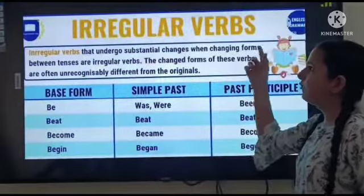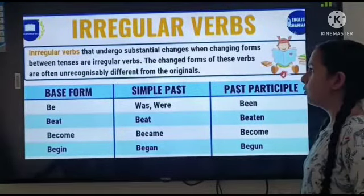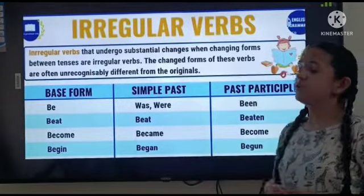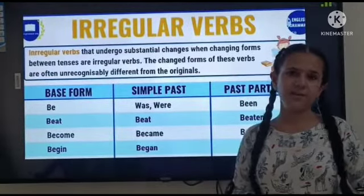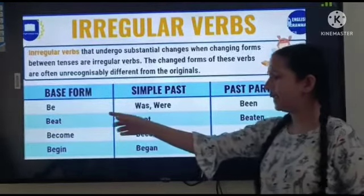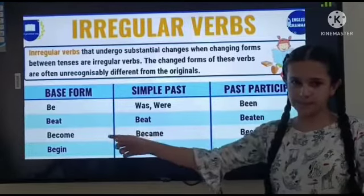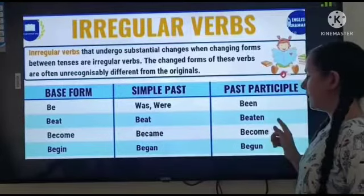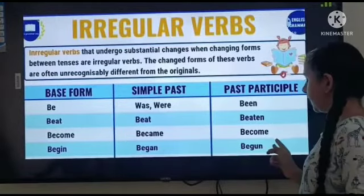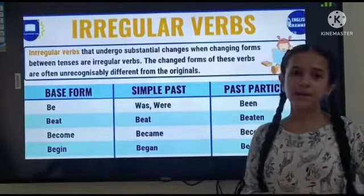Now, irregular verbs. Verbs that undergo substantial changes while changing forms between tenses are irregular verbs. For example: be, was, been. Beat, beat, beaten. Become, became, become. Begin, began, begun.